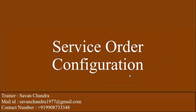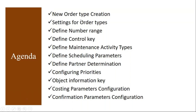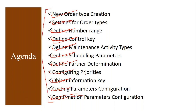The topics we are going to cover: how to create a new service order type, what settings we need to make for new order types, how to define number range, define the control key, define the maintenance activity types, define the scheduling parameters, define the partner determination, configure the priorities, configure the object information key, costing parameters configuration, and finally the confirmation parameters configuration.